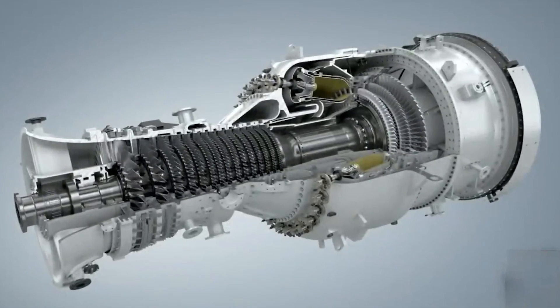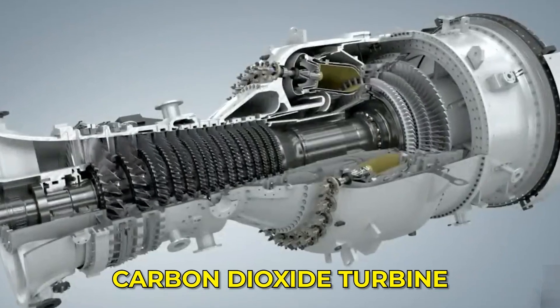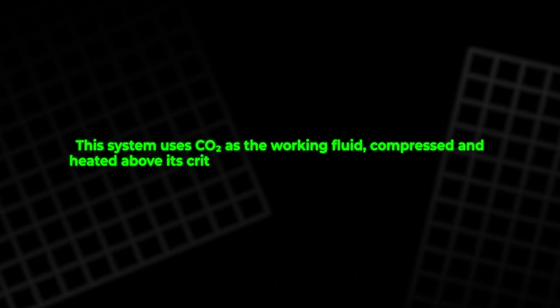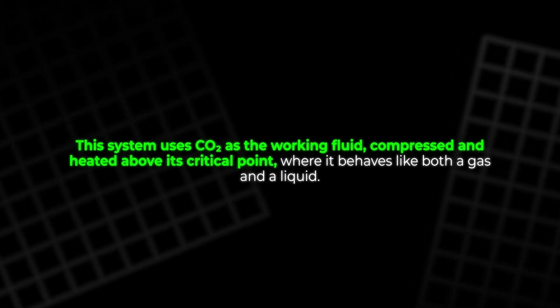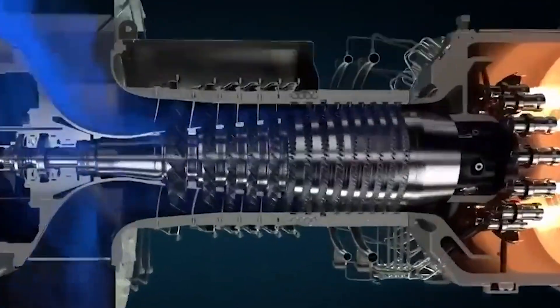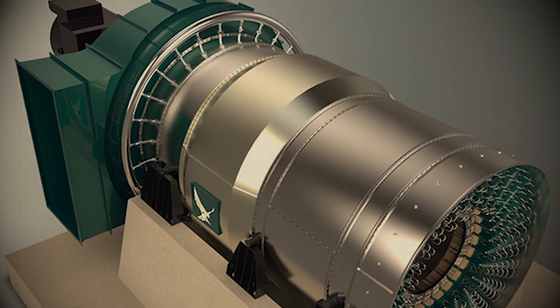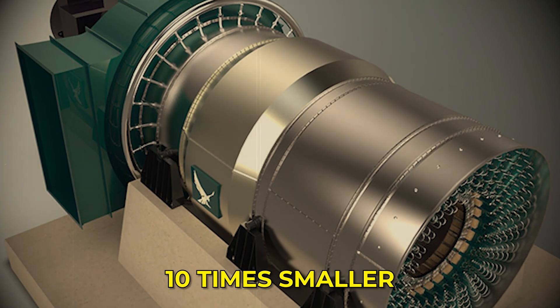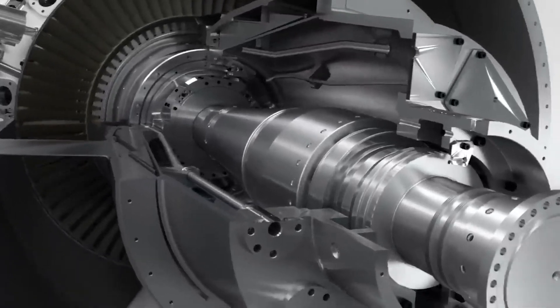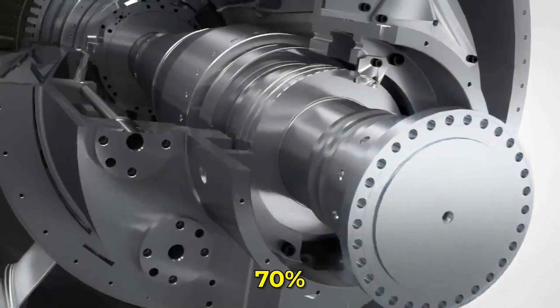Meanwhile, another innovation is gaining attention: the supercritical carbon dioxide turbine. This system uses CO2 as the working fluid, compressed and heated above its critical point, where it behaves like both a gas and a liquid. This unique property allows exceptional heat transfer and compact turbine design. Such turbines can be up to 10 times smaller than traditional steam turbines, yet capable of reaching efficiencies as high as 70%. That's beyond anything currently achieved by conventional systems.